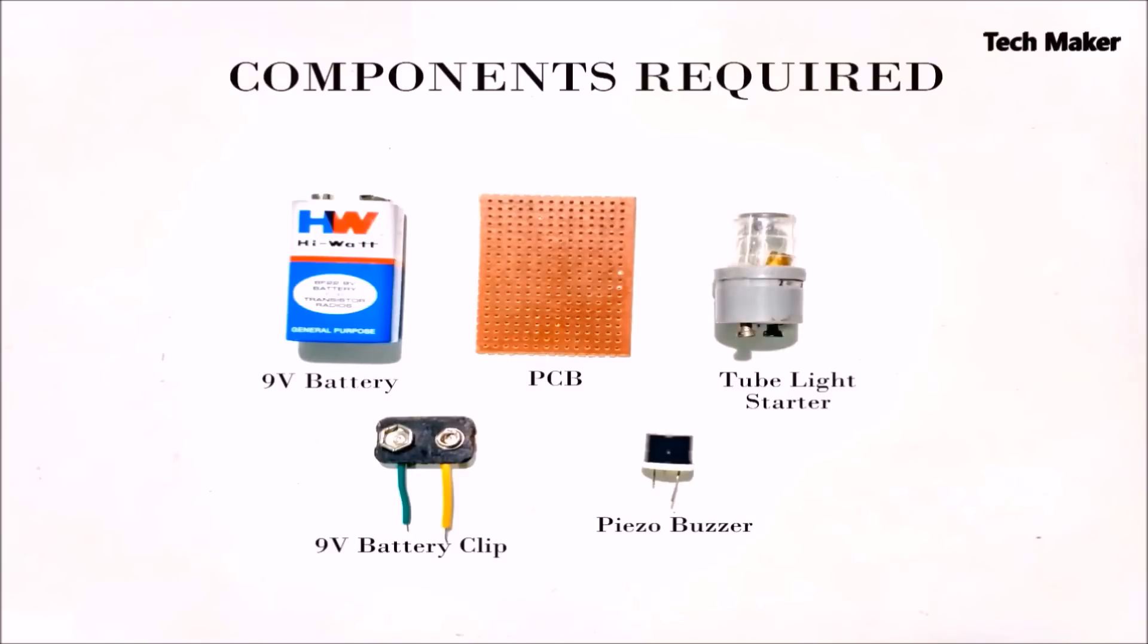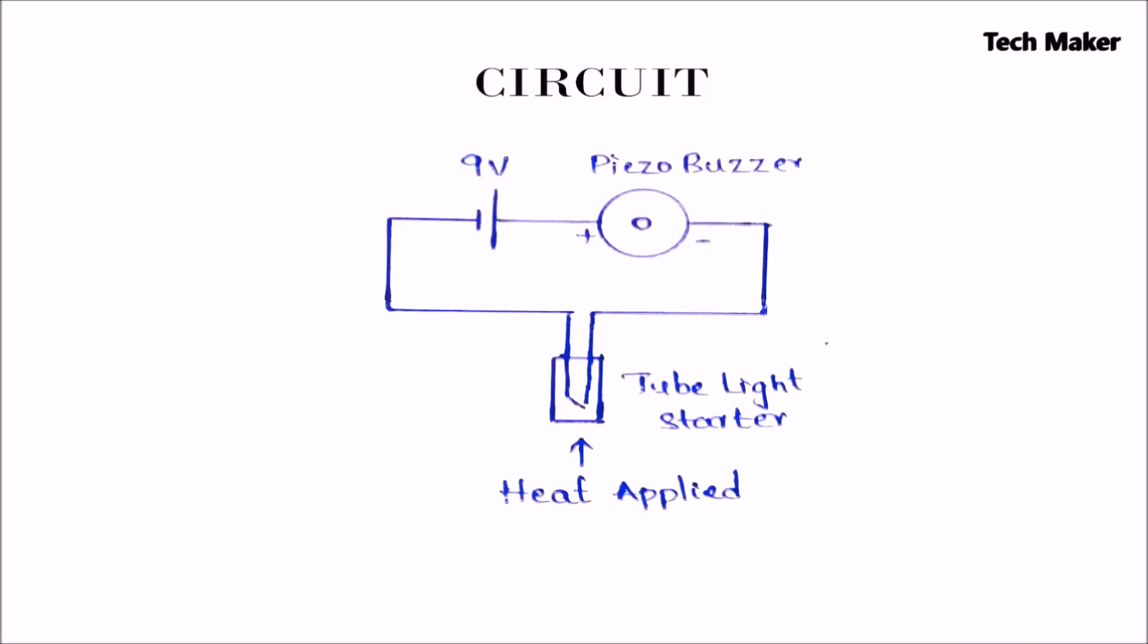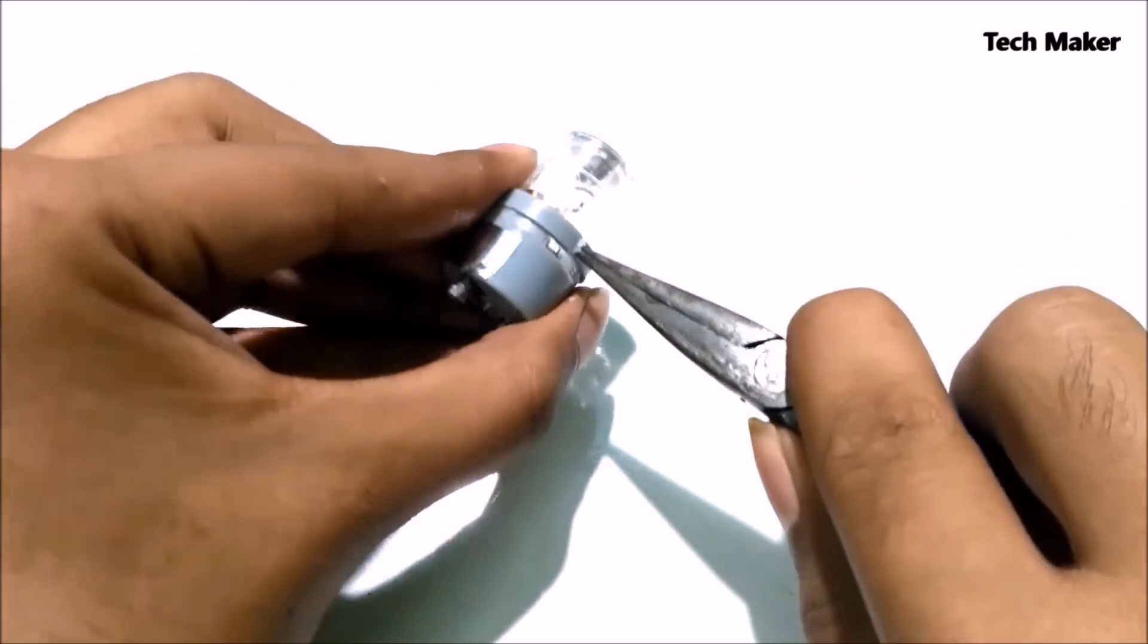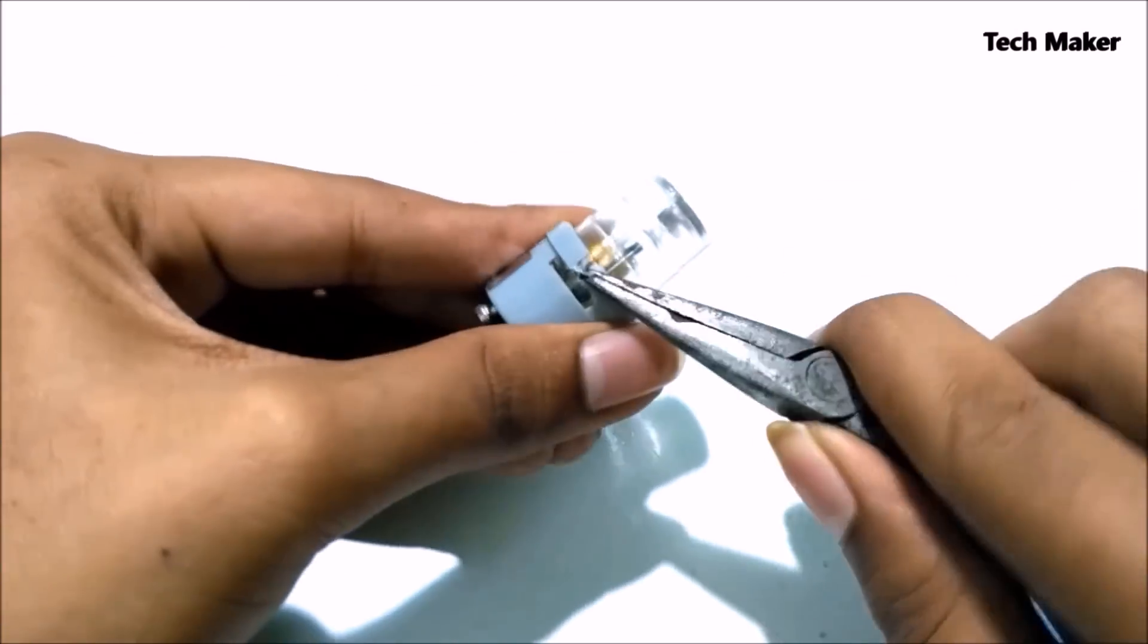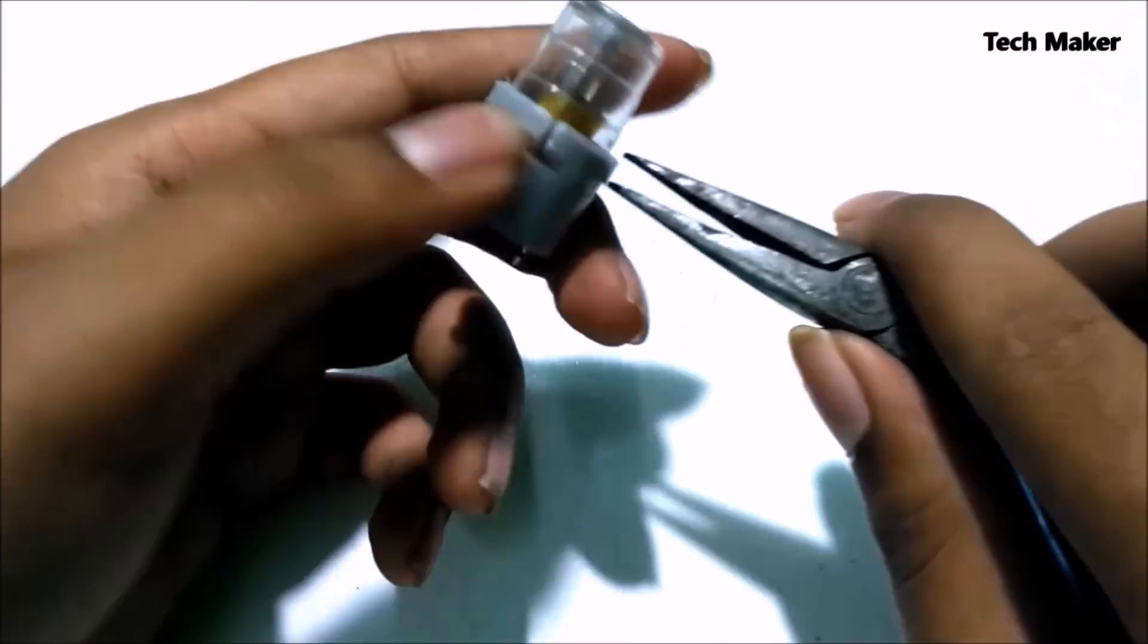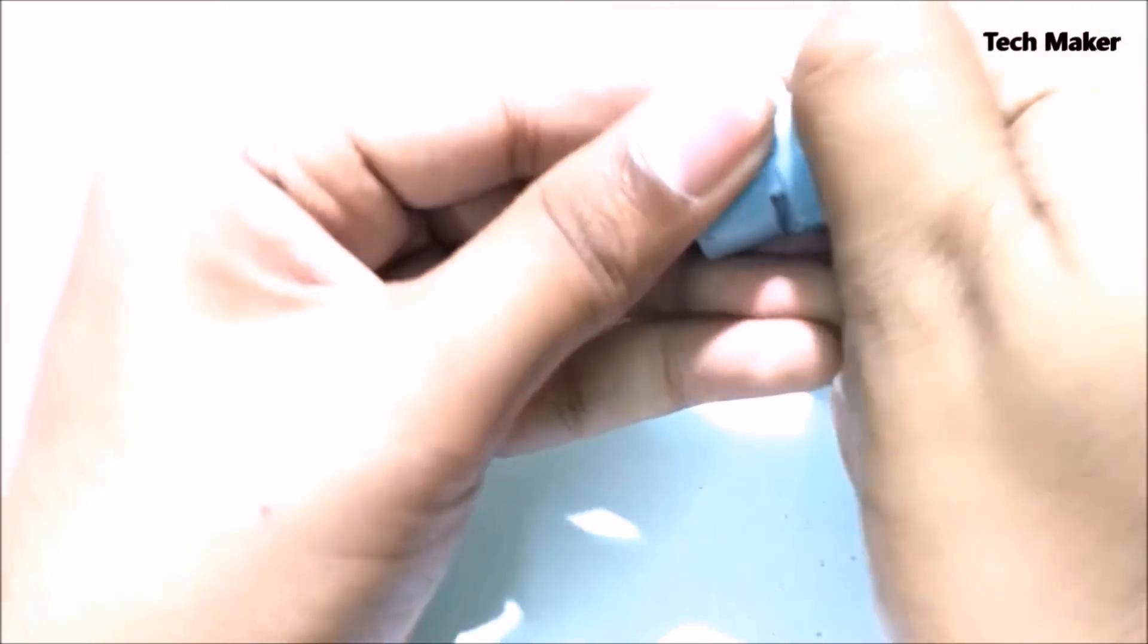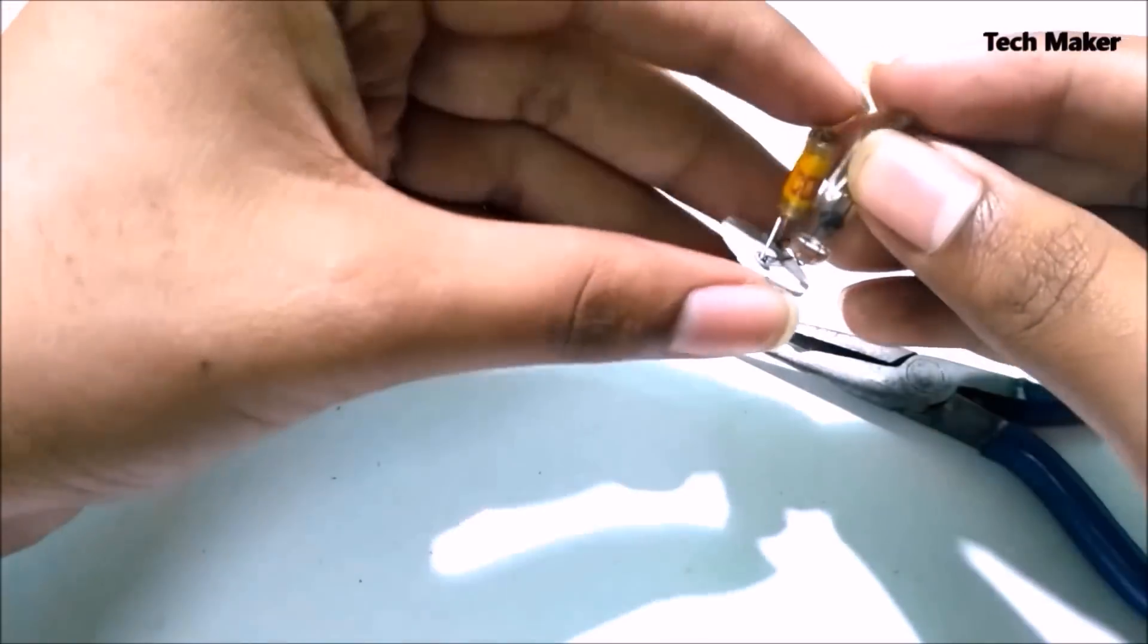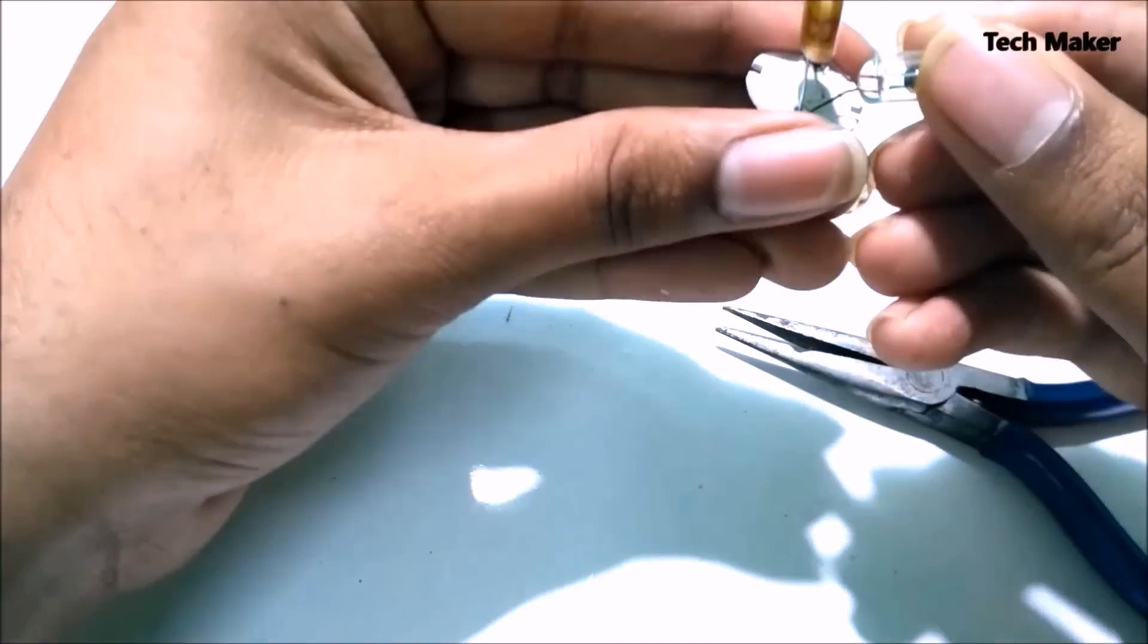These are the components required. This is the circuit diagram. First, take a fluorescent light starter and remove its case. Now remove the capacitor from it.